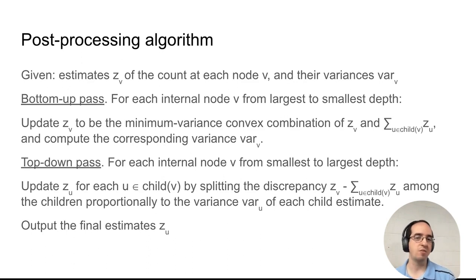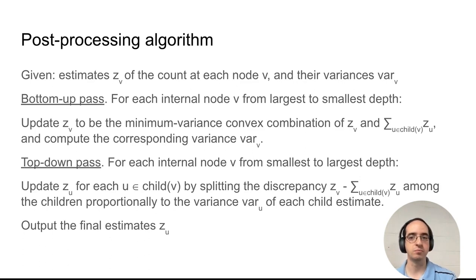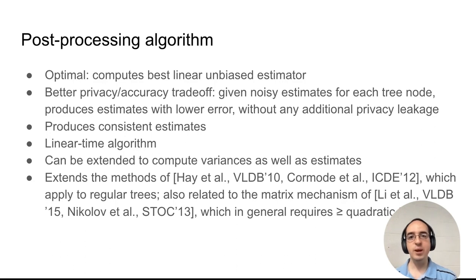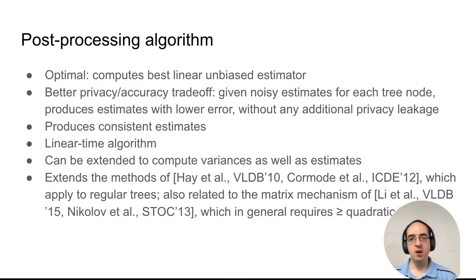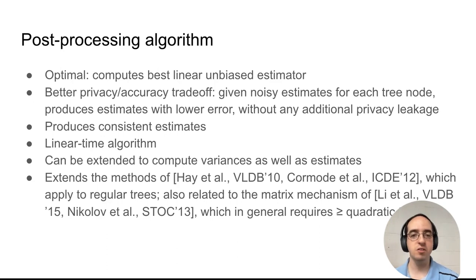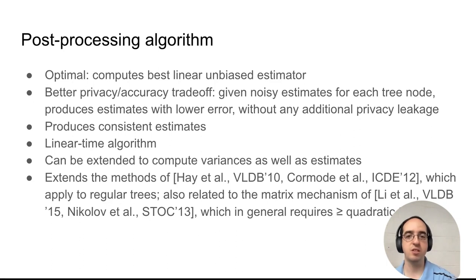It also improves the error of each of the estimates in the tree. We output the final estimates after these two passes through the tree. This algorithm is optimal in the sense that it computes the best linear unbiased estimator given the original estimates. It does not use additional privacy budget — we're only using the original noisy estimates of each node in the tree and producing estimates with lower error without any additional privacy leakage, giving us a better trade-off between privacy and accuracy.